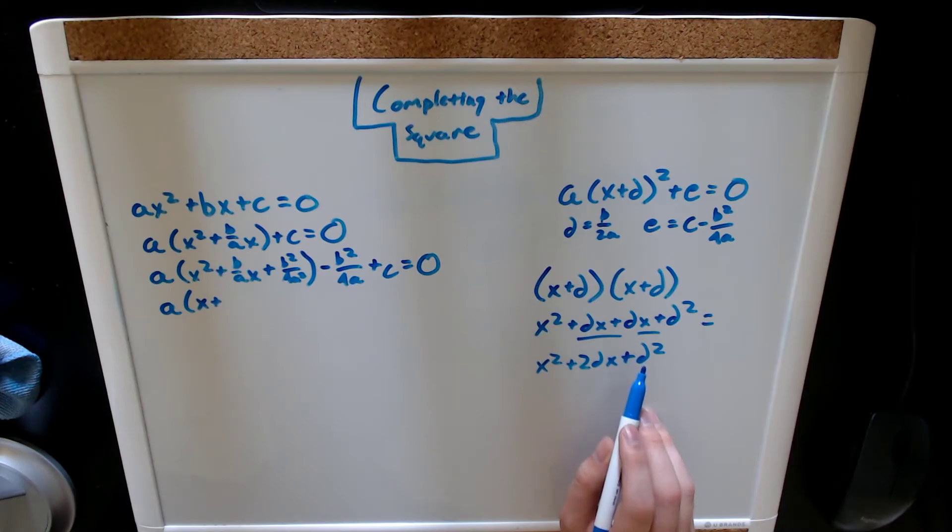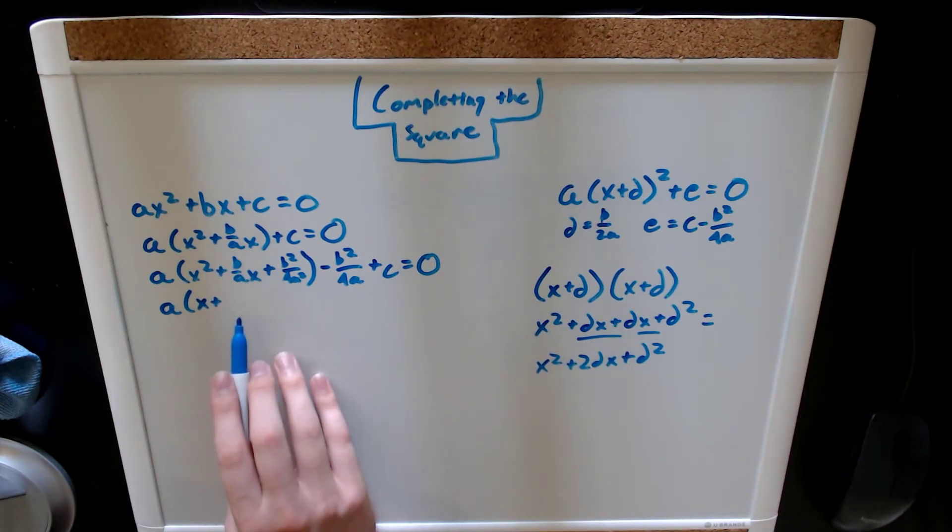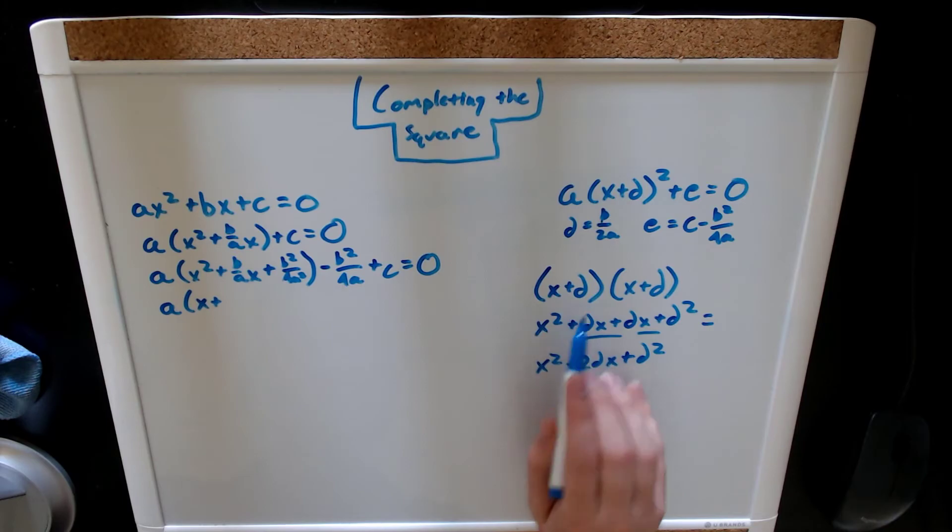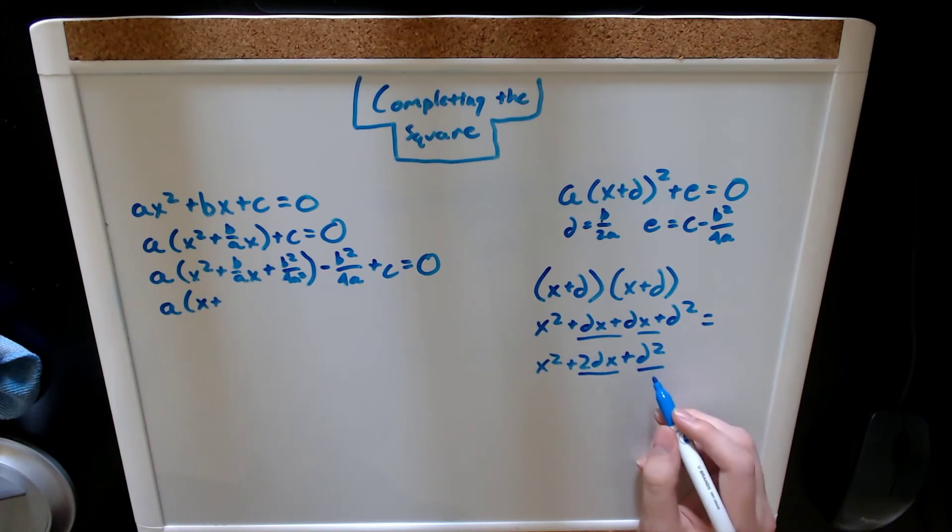So, as you can see, whatever value is going to complete this, or our d, is going to be this, divided by two, or this, or the square root of this.